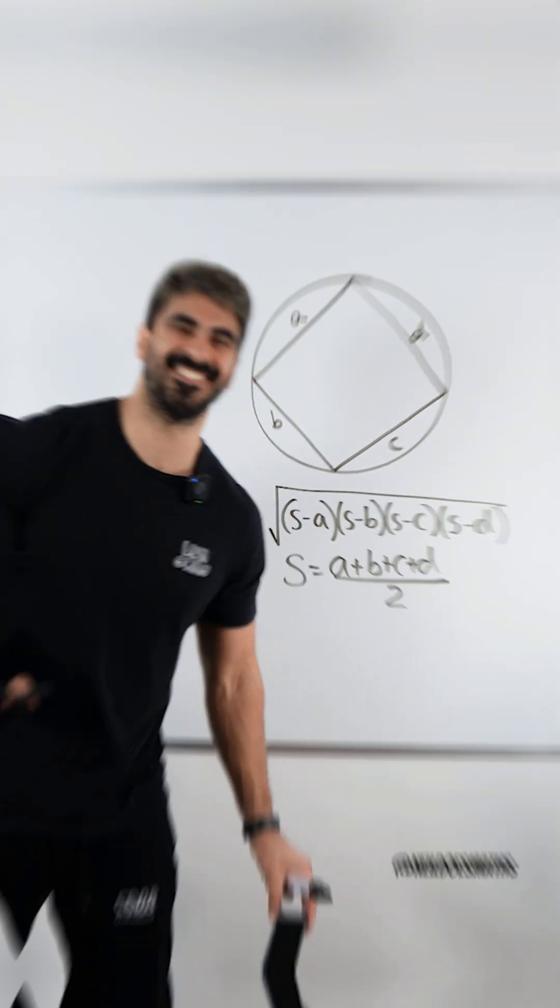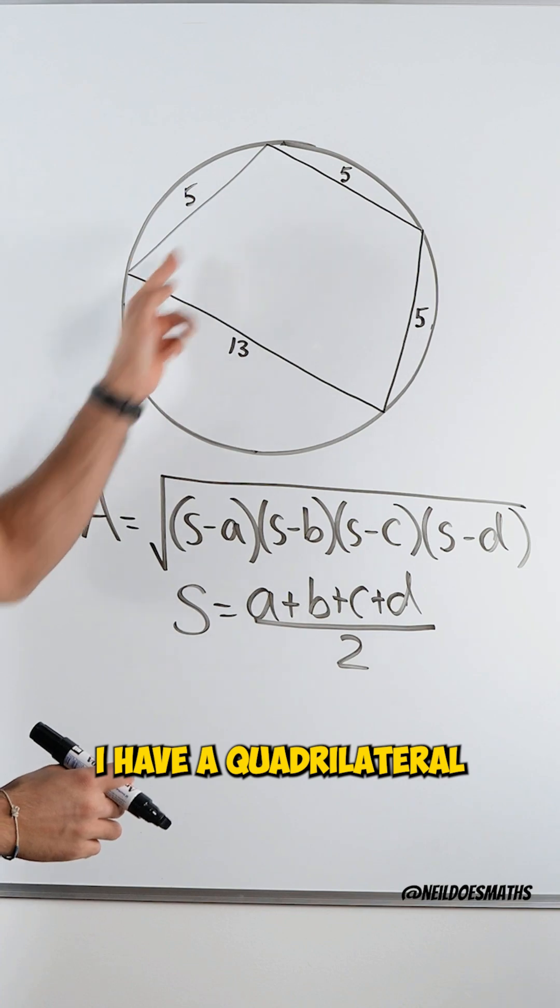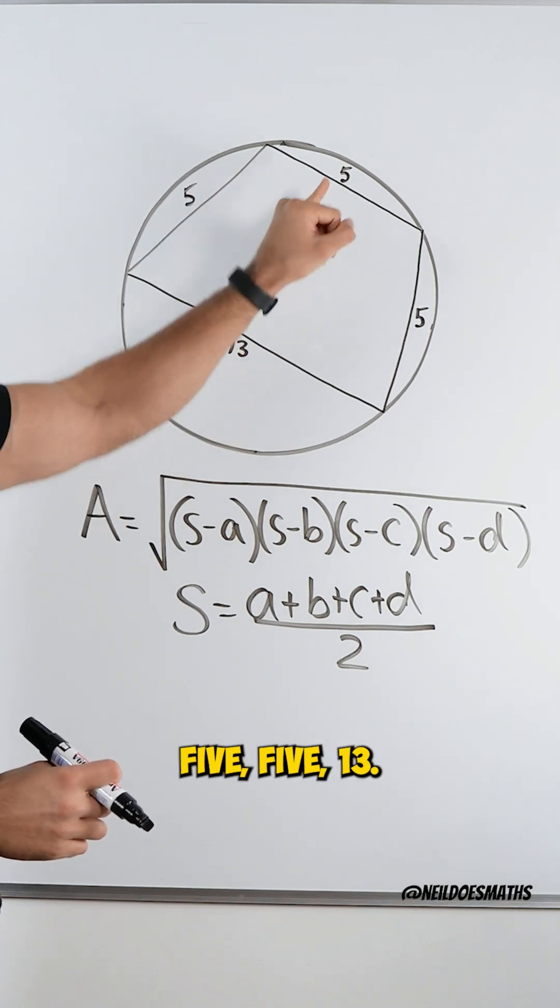Let's do an example. So take a look at this example. I have a quadrilateral with side lengths 5, 5, 5, 13.